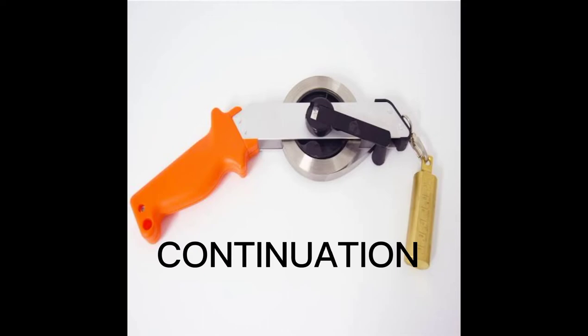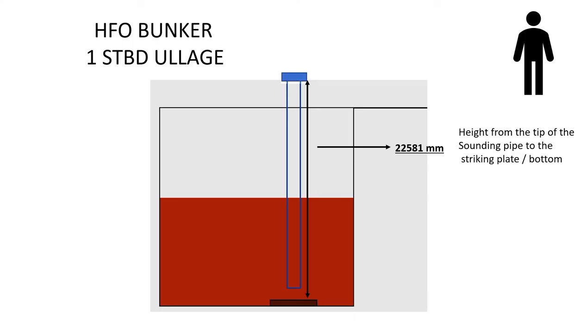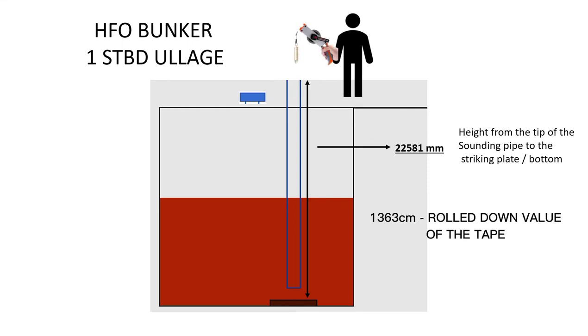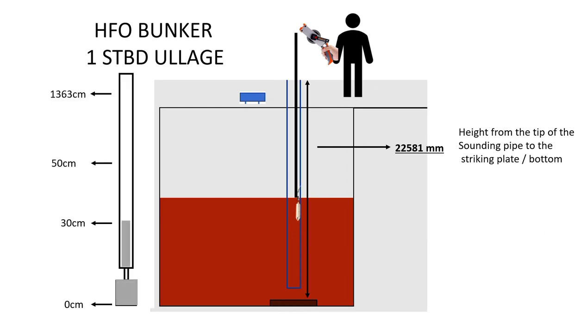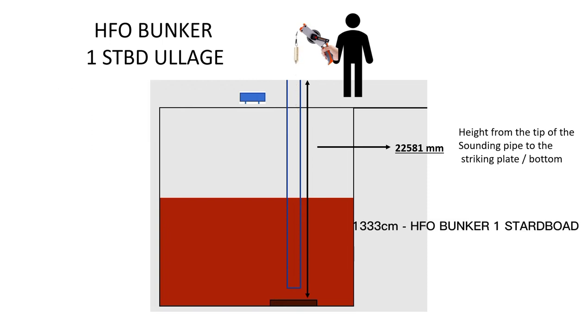Let's go back. How Cadet get the value. Cadet is tasked to measure the ullage of HFO Bunker 1 starboard. The height of the tip of the sounding pipe to the striking plate is 22,581 cm. Based on his calculations and compared value, he will roll down 1363 cm of tape in the sounding pipe. While slowly rolling down the tape, he measured 30 cm of oil in the tape. Let's calculate: 1363 cm minus 30 cm equals 1333 cm. 1333 cm is the HFO Bunker 1 starboard ullage.